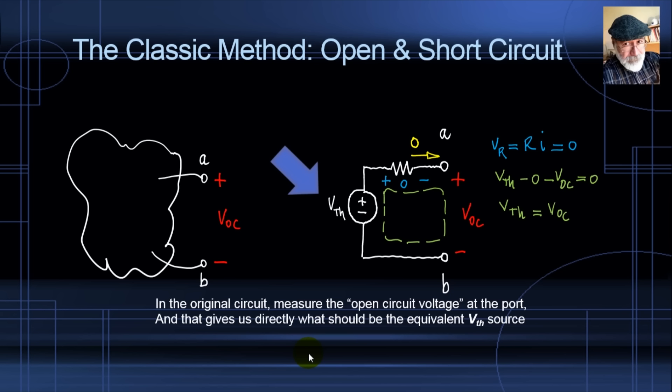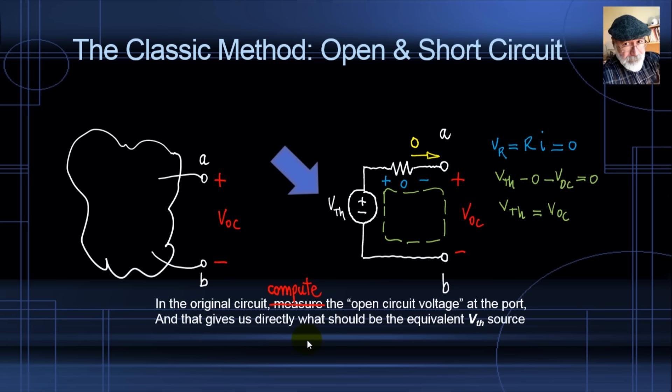This is what we call the open circuit test. Now, how do we compute R_TH? Along the same lines: if the original circuit is truly equivalent to the Thevenin-Helmholtz circuit, then if we short the original circuit and measure the short circuit current, that same current should flow in the Thevenin equivalent when shorted. In the equivalent, that current is given by Ohm's law: I_SC = V_TH / R_TH. Since we know both V_TH and I_SC, we solve for R_TH = VOC / I_SC.